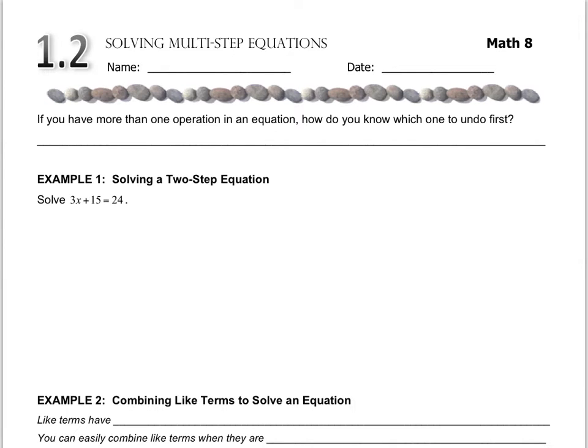In the last lesson, we looked at equations that only had one operation to inverse, which is why they were called simple equations. These are called multi-step equations, so we're going to have multiple terms that need to get removed.